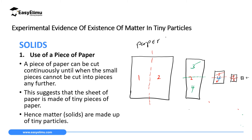It will become very small drops. And if you are careful and recombine all the pieces, it will still form a whole paper. So this experiment of cutting a piece of paper into smaller and smaller pieces until you cannot cut it anymore is one proof that solids are made up of very small particles.